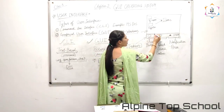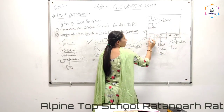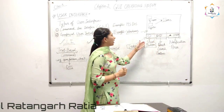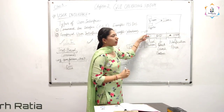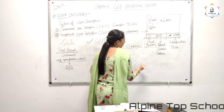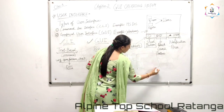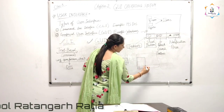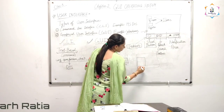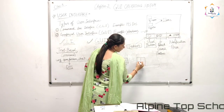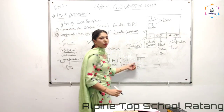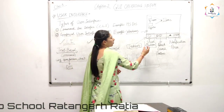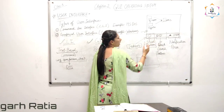The taskbar is divided into three sections. The first section is our Start button. What is the function of the Start button? When we click on the Start button, a number of options appear. The names of programs are listed there, and whichever program you want to open, you can open that program from here.